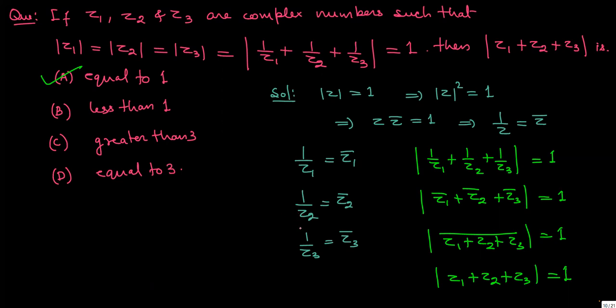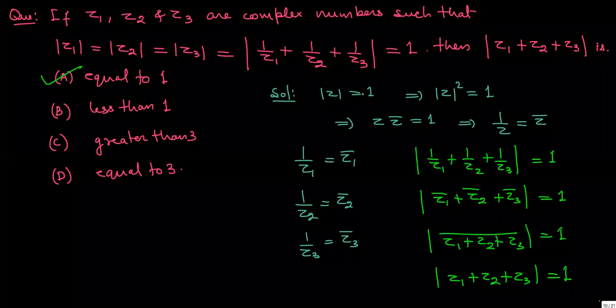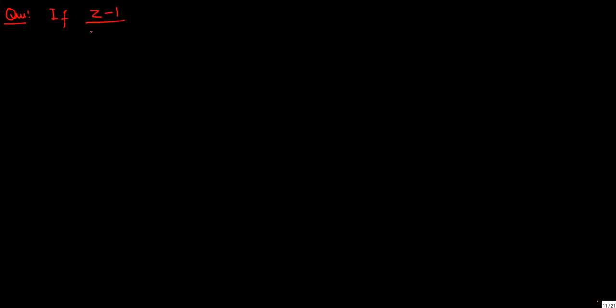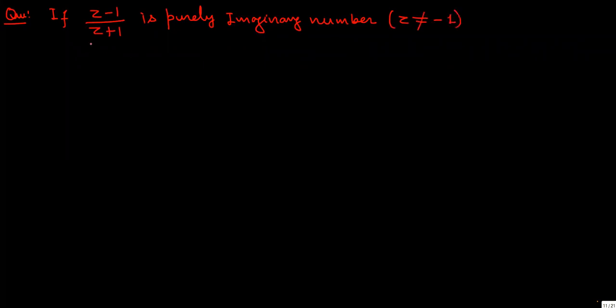Write down the next question. If (z minus 1) upon (z plus 1) is a purely imaginary number — given that z is not equal to minus 1, so that the expression is defined — then find mod z.